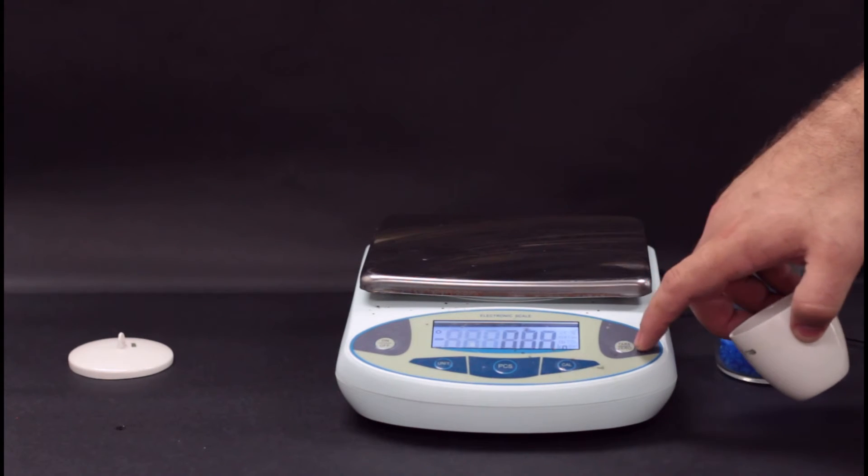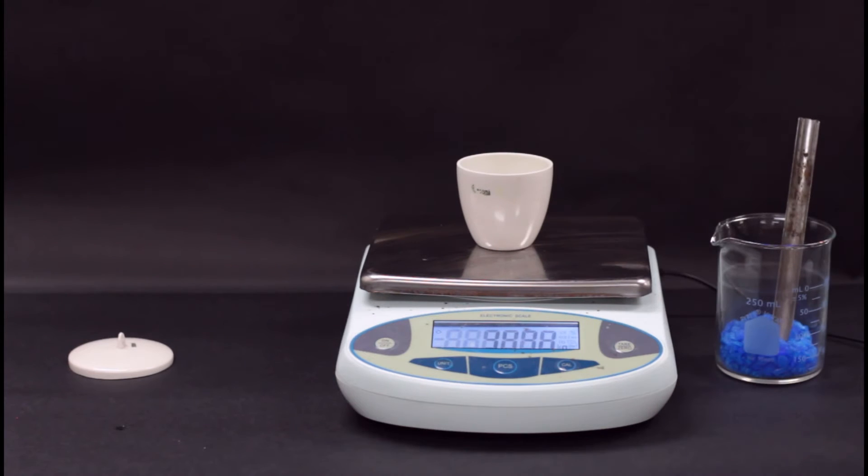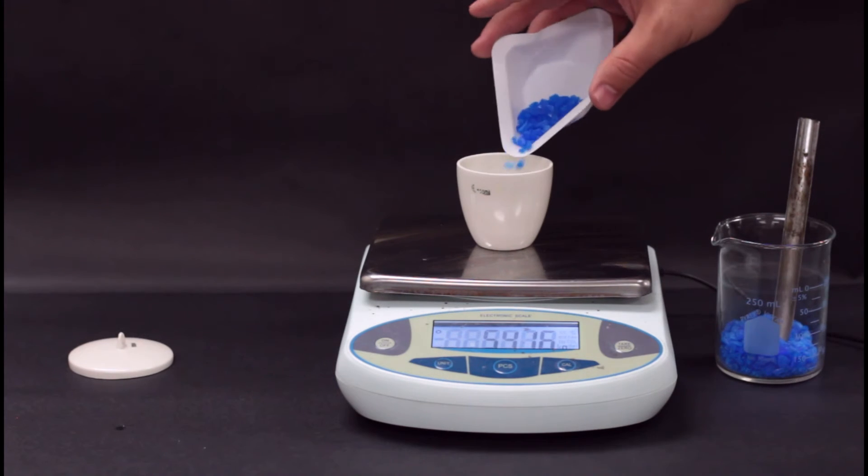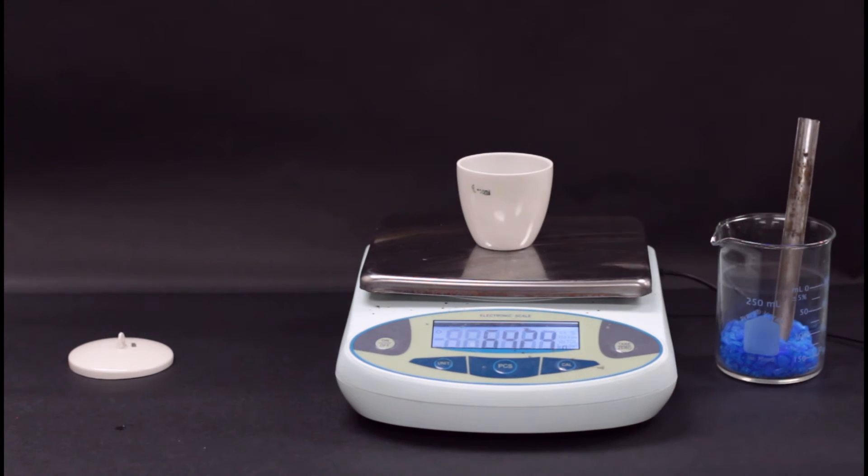Next, weigh your crucible and write it down. Then pour your copper sulfate and write down the weight of the crucible and the copper sulfate together.